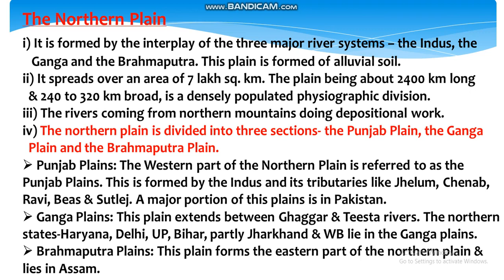The northern plain is divided into three sections: the Punjab plain, the Ganga plain and the Brahmaputra plain. The western part of the northern plain is referred to as the Punjab plain. It is formed by the Indus and its tributaries like Jhelum, Chenab, Ravi, Beas and Sutlej. A major portion of this plain is in Pakistan. Utarī maidān ke paścim bhāg ko Panjāb kā maidān kahā jātā hai; yah Sindhu aur iskī sahāyak nadiyoṃ — Jhelam, Cenāv, Rāvī, Vyās tathā Satlaj — se nirmit hai; is maidān kā baṛā hissā Pākistān meṃ hai.